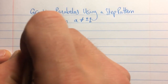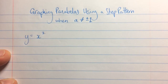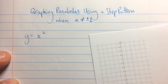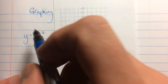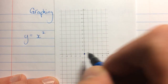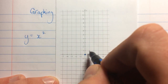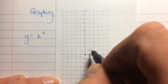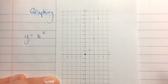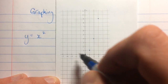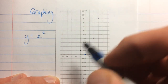We already know how to graph y equals x-squared. We use a step pattern of 1, 3, 5, 7, 9, etc., going up by 2 every time, starting at the vertex — which in this case is at 0, 0. We go over 1 and up 1, then over 1 and up 3, over 1 and up 5, and so on. Same mirror image on the other side: 1, 3, 5.